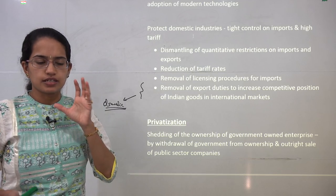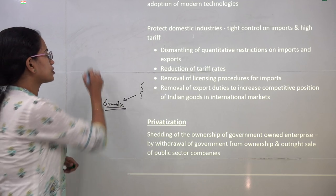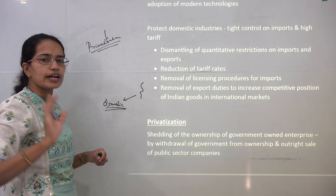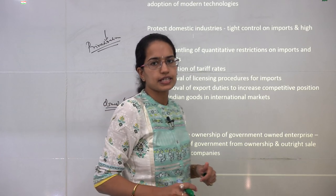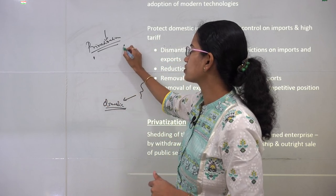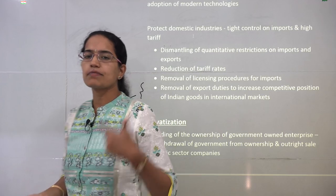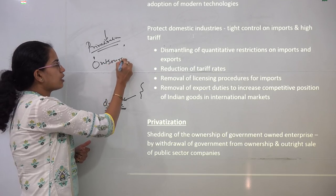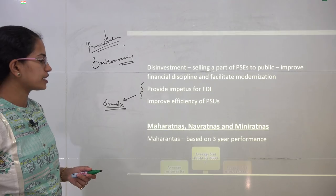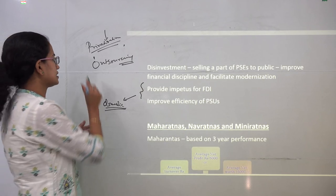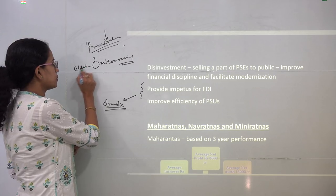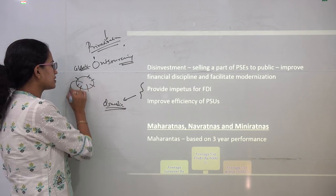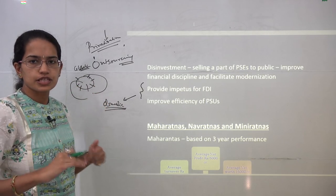Coming to privatization — under liberalization there was a major push on privatization. Networks of private organizations came up in the market, whether in industry, banking, or the financial sector. Slowly and gradually the concept of outsourcing started, which was very important with the aspect of globalization. Under globalization, the interconnecting of various aspects took place and products were spread far and wide within and outside India.